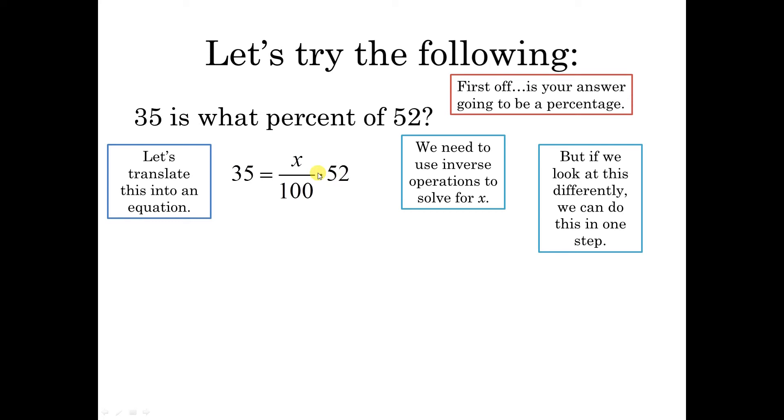All we gotta do is rearrange this a little bit. See, this is really the same as x times 52 divided by 100, like the fraction 52 over 100. These two things are the same because of the commutative property of multiplication.